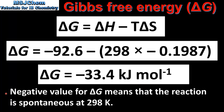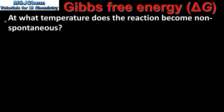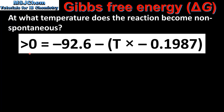The negative value for delta G means that the reaction is spontaneous at 298 Kelvin. Finally, we look at what temperature the reaction becomes non-spontaneous. A non-spontaneous reaction has a positive delta G value, so we can say that greater than 0 equals the change in enthalpy minus the temperature times the change in entropy.